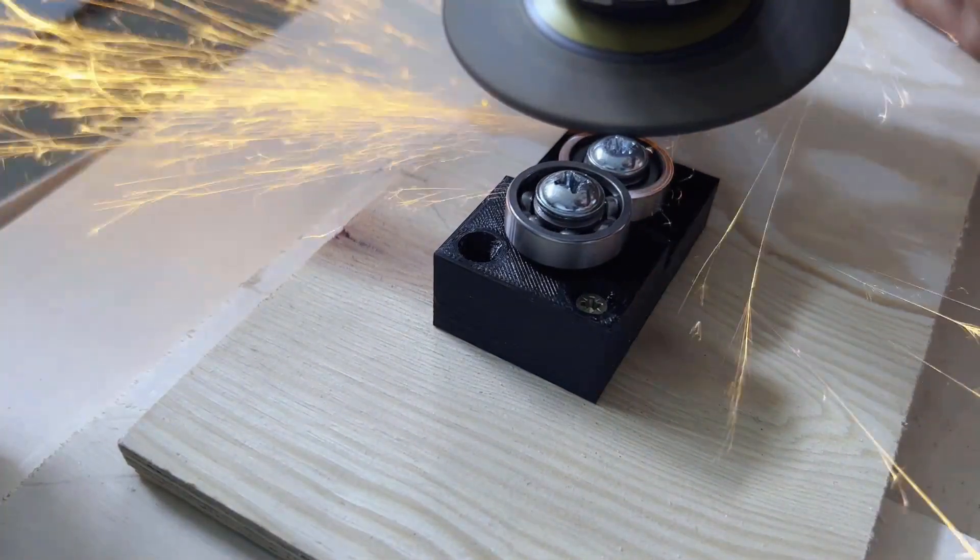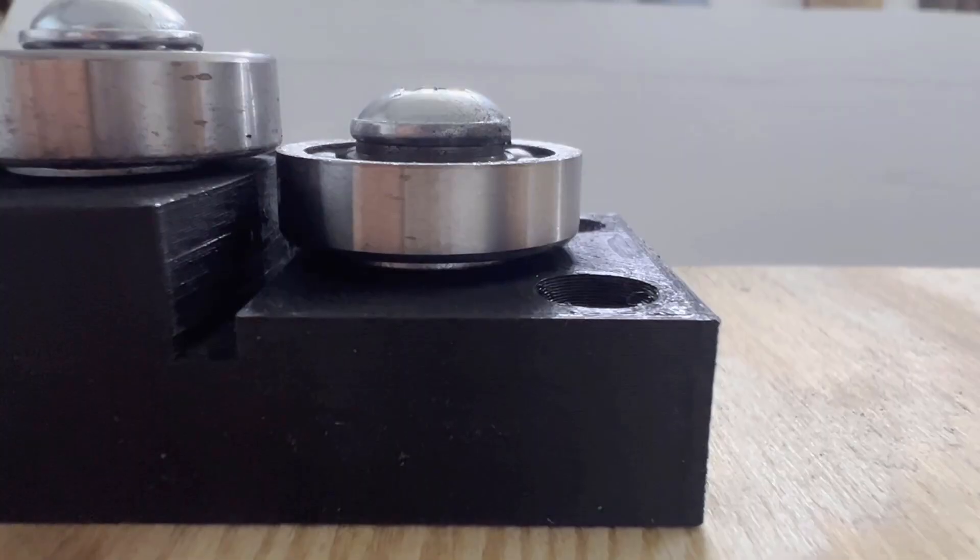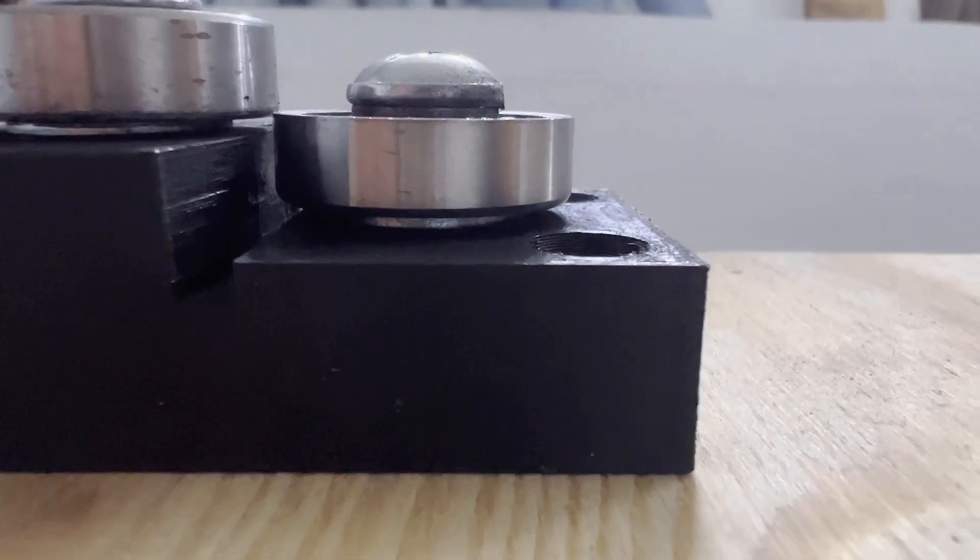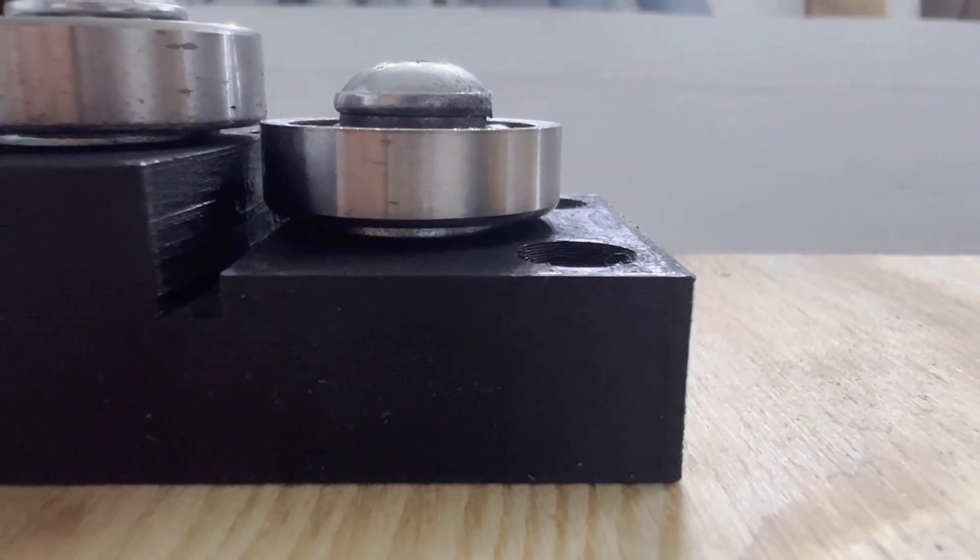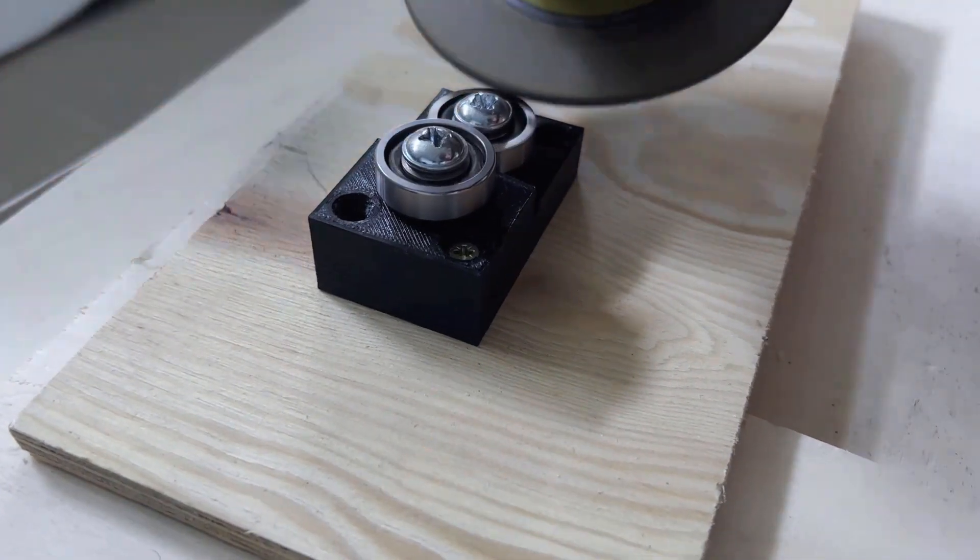When sharpening, several principles must be followed. Firstly, the bearing must be even, with no curvature or varying thickness. When I spin the bearing, this step should be easy.